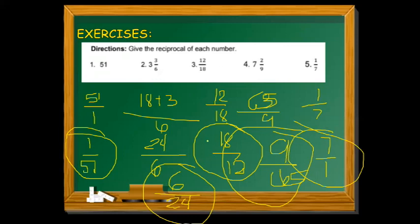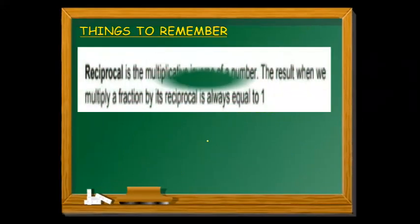I think that's all for this topic. Reciprocal is the multiplicative inverse of a number. We just reverse the numerator and denominator, and the result when we multiply a fraction by its reciprocal is always equal to 1.